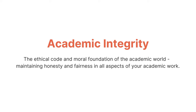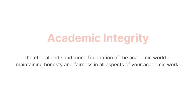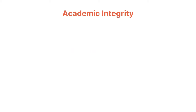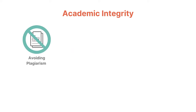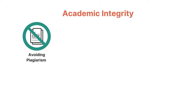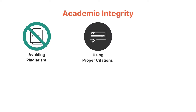Now, let's delve into academic integrity. Academic integrity is the ethical code and moral foundation of the academic world. It means maintaining honesty and fairness in all aspects of your academic work. Examples of academic integrity include: first, avoiding plagiarism — that is, not using someone else's work, ideas, or words without proper citation. Using proper citations means giving credit to the original authors when you use their research or ideas.